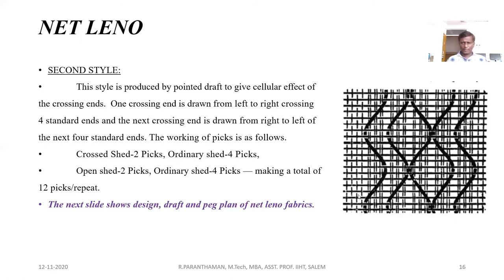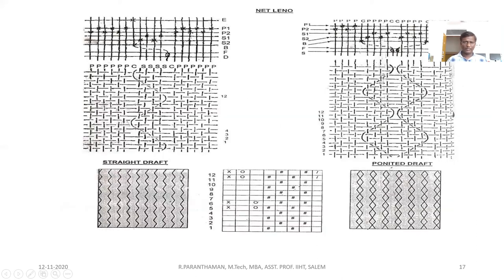The second type is produced by using pointer drafts. It gives a cellular effect in its structure. The ends are crossed with the cross shed for two picks. The working picks are as follows: cross shed two picks, ordinary set four picks, open set two picks, and ordinary set four picks — making a total of 12 picks per repeat. This is the construction of the net leno fabric. In the design, P denotes the plain weave ends and S denotes the standard end; a single crossing end crosses the four standard threads.